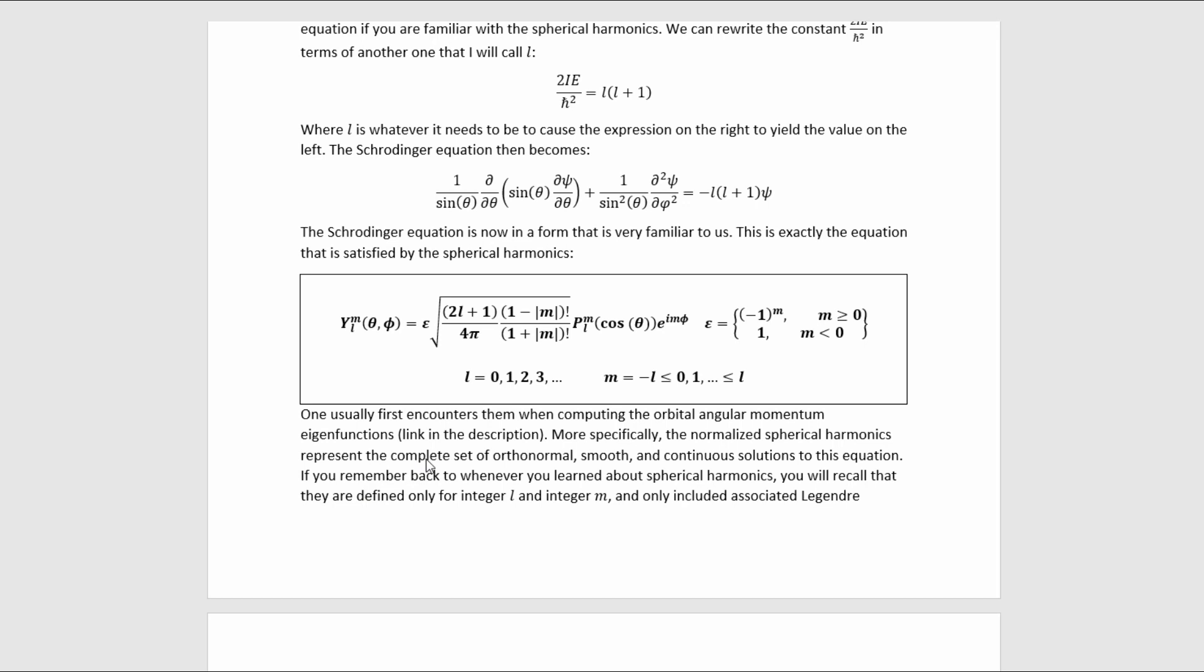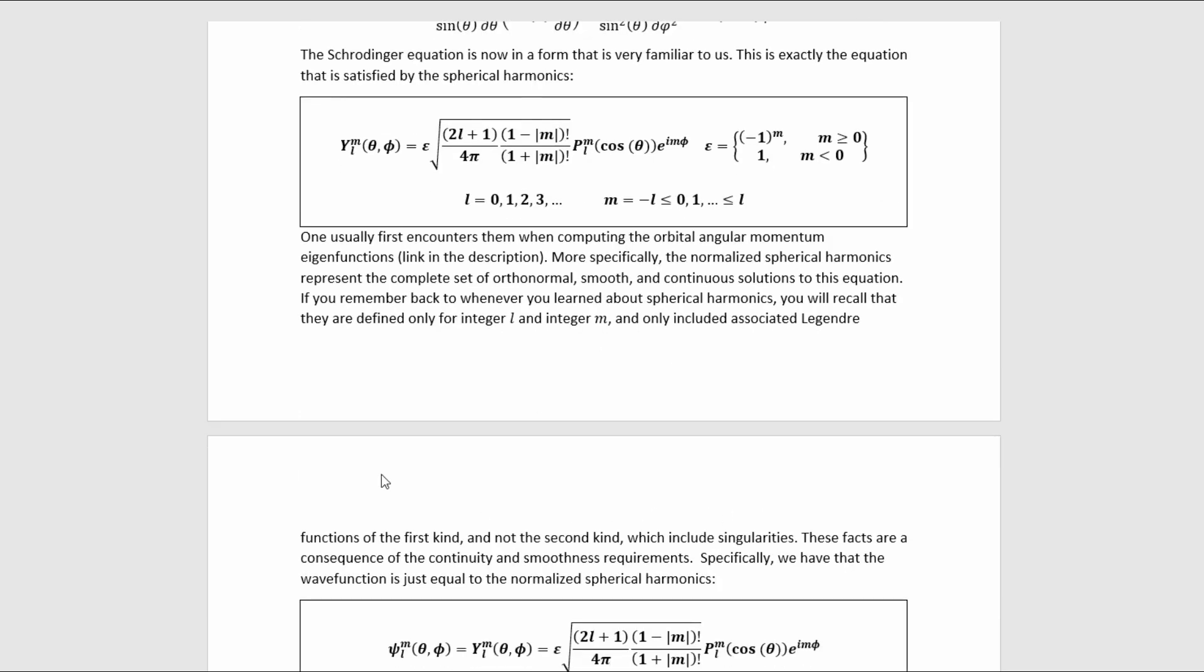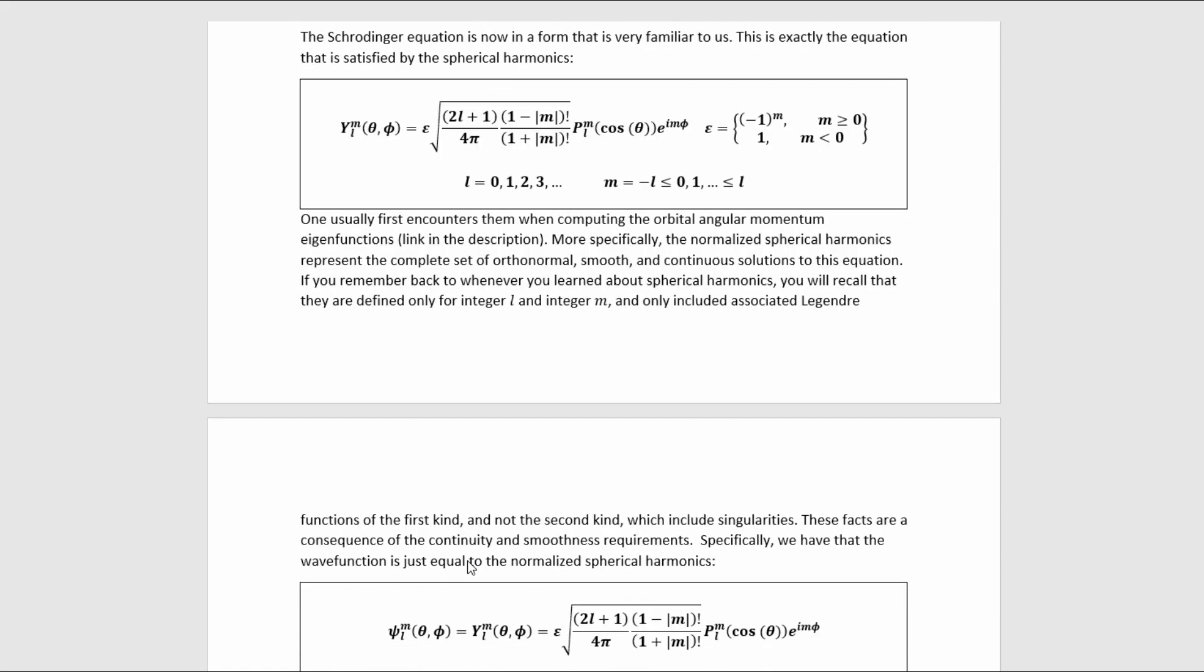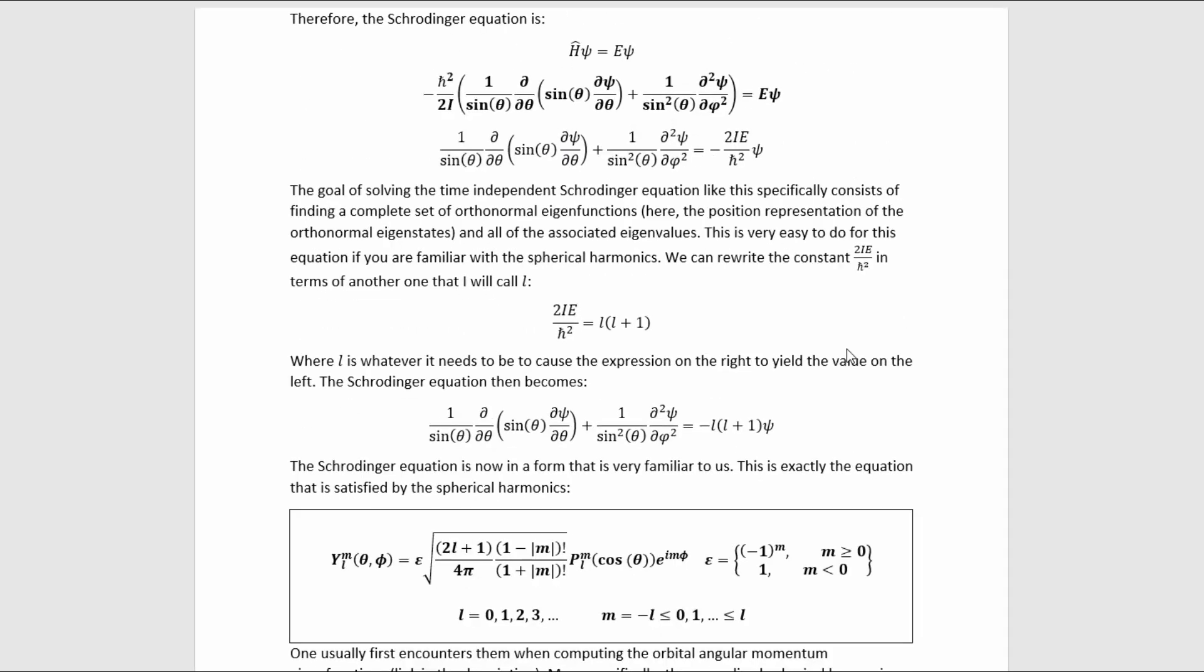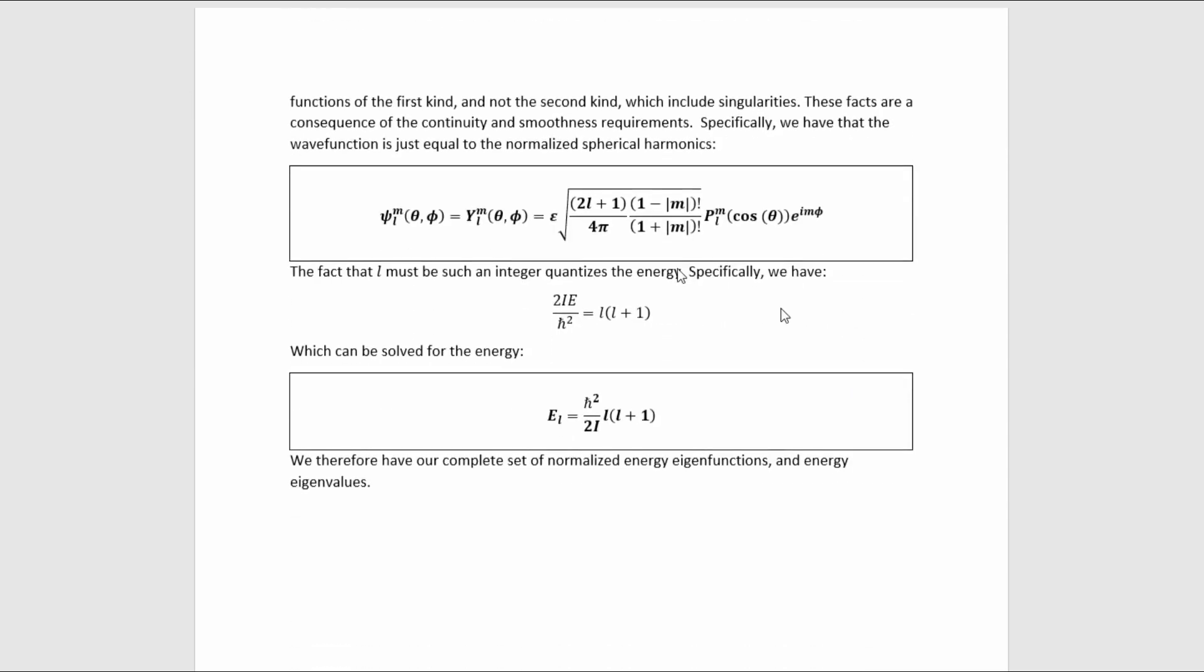More specifically, the normalized spherical harmonics represent the complete set of orthonormal, smooth, and continuous solutions to this equation. If you remember back to whenever you learned about spherical harmonics, you will recall that they are defined only for integer L and integer M, and only include associated Legendre functions of the first kind and not the second kind, which include singularities. These facts are a consequence of the continuity and smoothness requirements. Specifically, we have that the wave function is just equal to the normalized spherical harmonics. So in short, because the spherical harmonics are the complete set of orthonormal solutions to this equation here, and therefore the Schrödinger equation for the quantum rigid rotor, they're literally just our wave function.